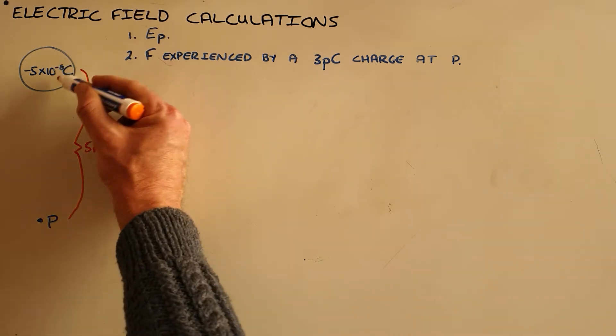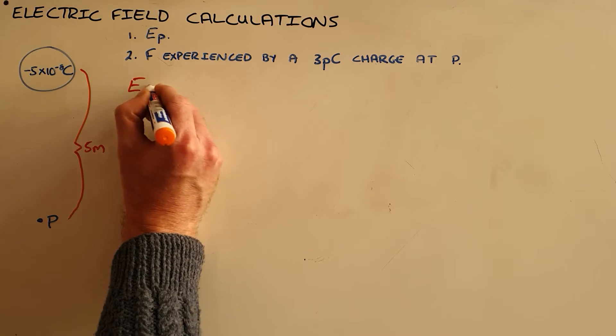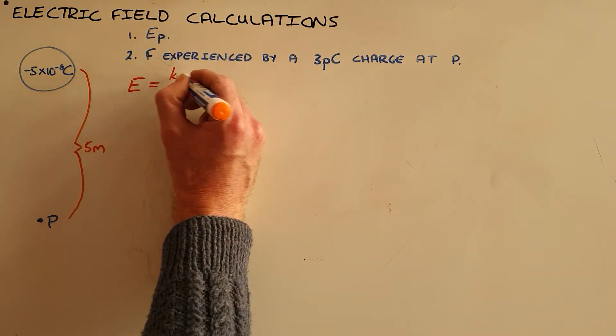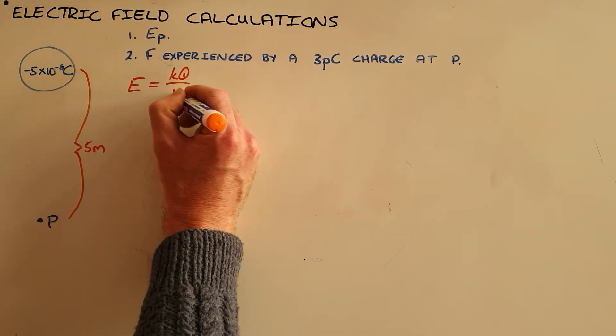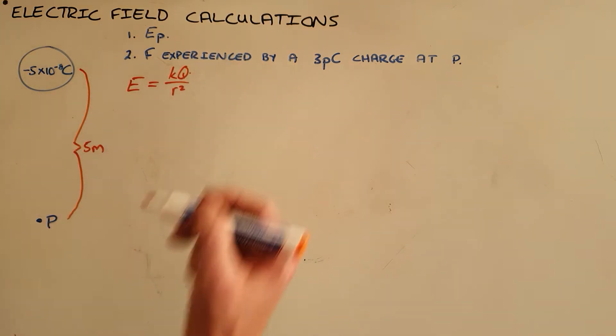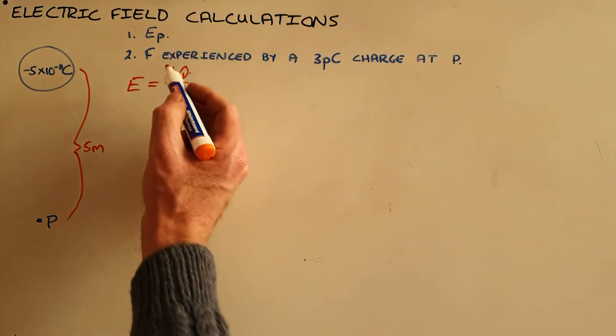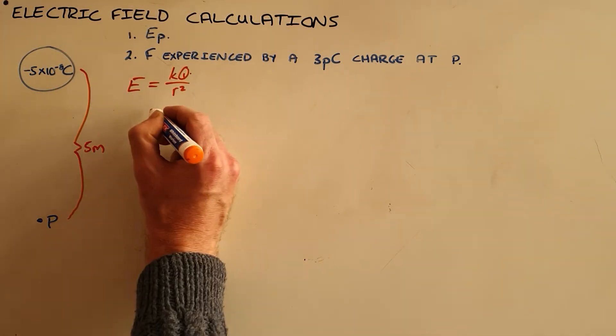Now, since this is the charge that is creating the electric field, we are going to use the formula electric field is equal to kq over r squared, because this charge in this formula refers to the charge creating the electric field.